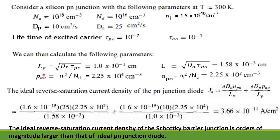Now we can calculate the diffusion lengths LP = √(DP·τpo) and LN = √(DN·τno), giving values of 1 × 10⁻³ cm and 1.58 × 10⁻³ cm respectively. Then we calculate pno using ni² / ND and obtain the answer as 2.25 × 10² cm⁻³.